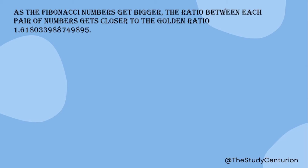As the Fibonacci numbers get bigger — you keep adding and adding, it's never ending, it goes to infinity — the ratio between each pair of consecutive Fibonacci numbers gets closer and closer to the golden ratio.